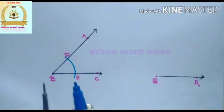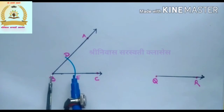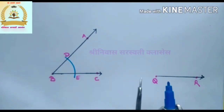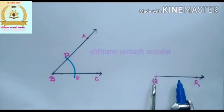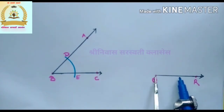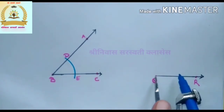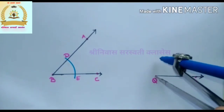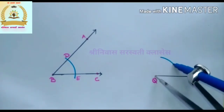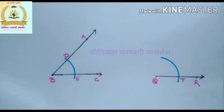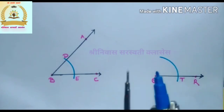Using the same distance, place the compass point at point Q of ray QR and draw an arc. Let this arc cut the ray QR at point T.